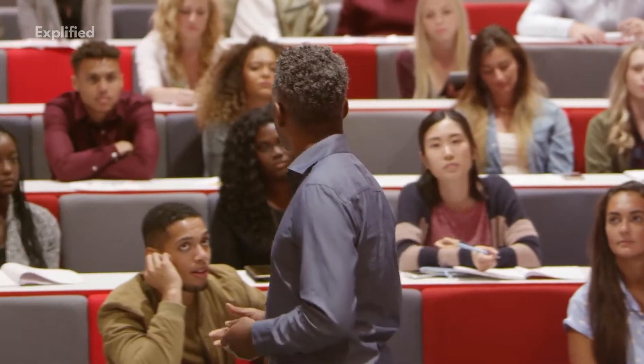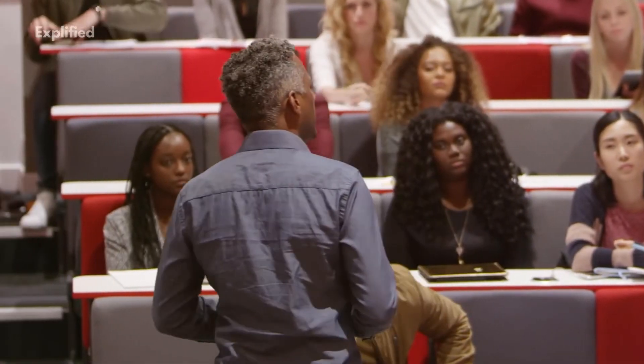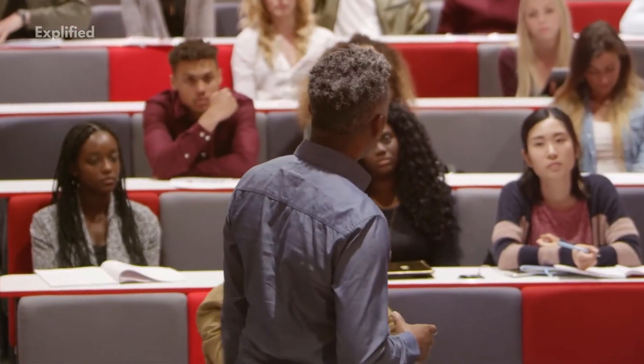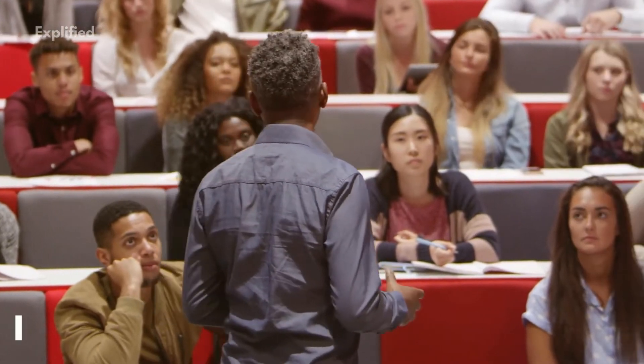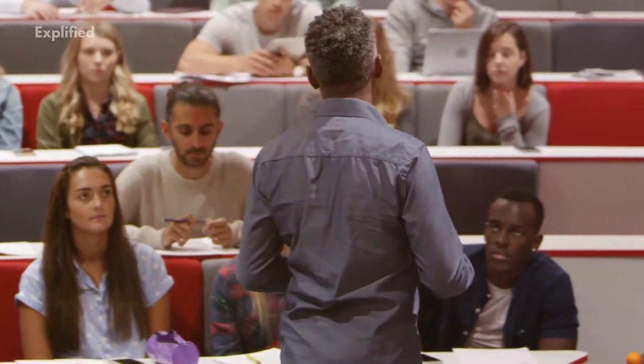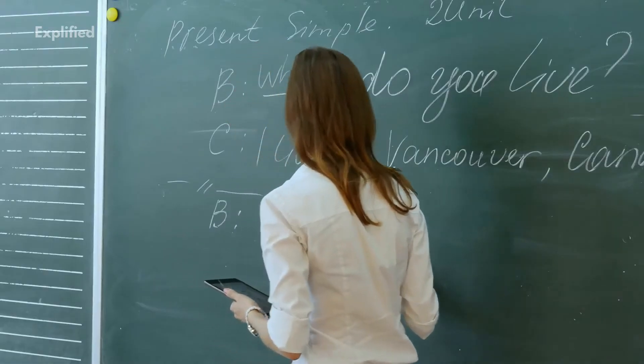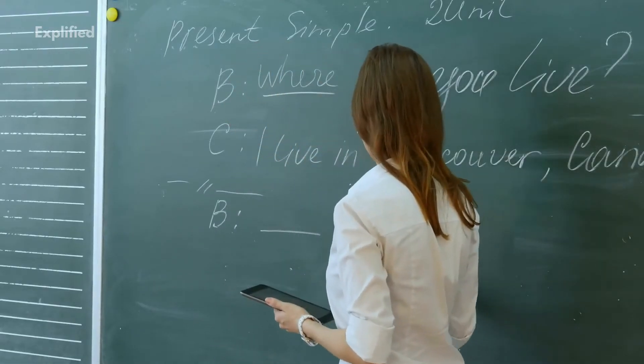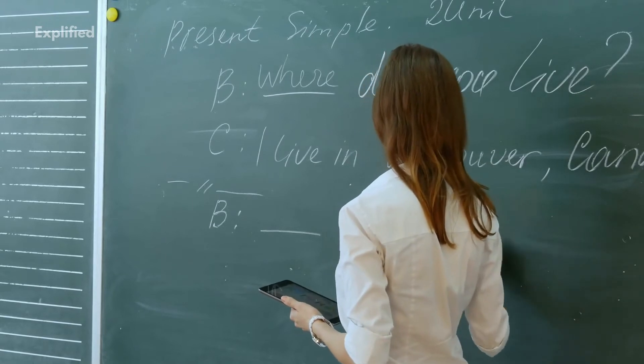To explain this exception, a separate law was formulated, presently known as Werner's law. According to it, the Indo-European p, t, k that directly follow the stressed accent in a word shift consonants in Germanic English to f, th, and h.